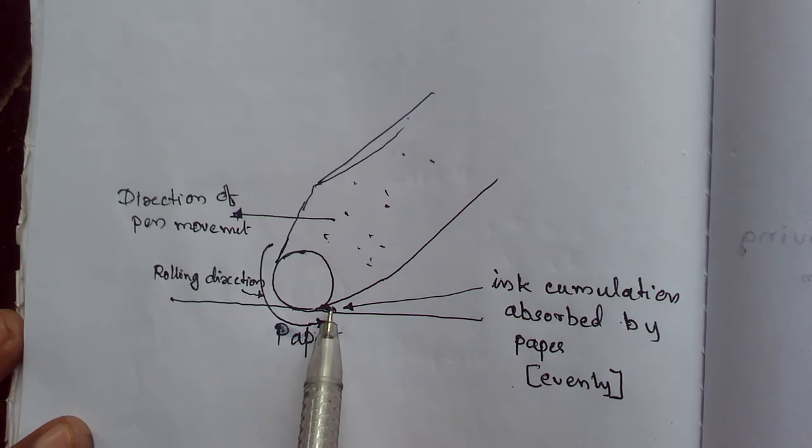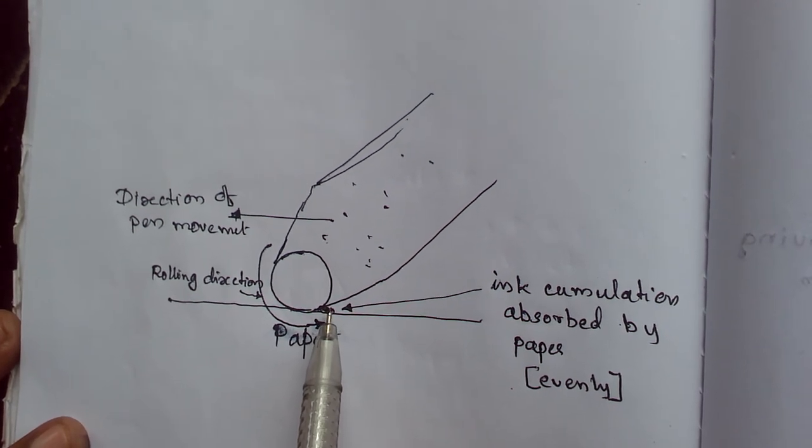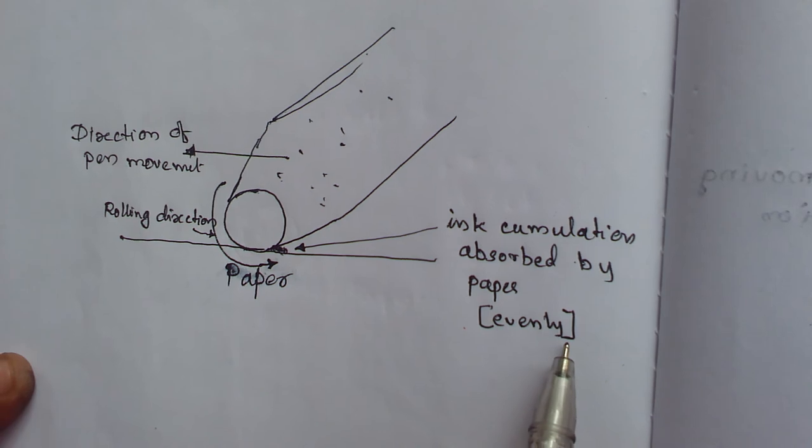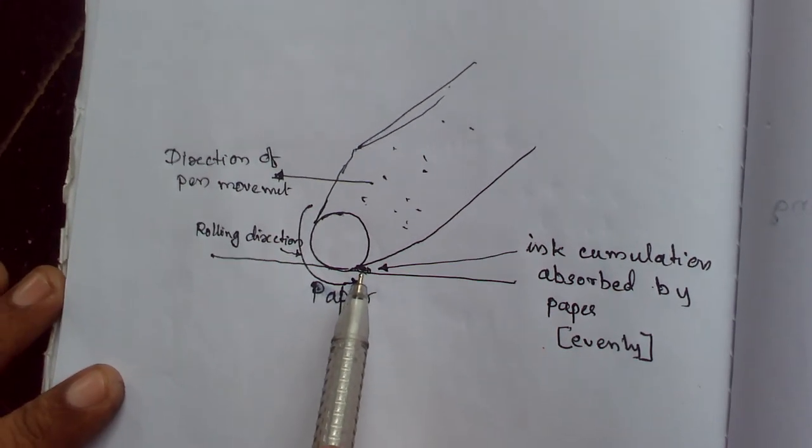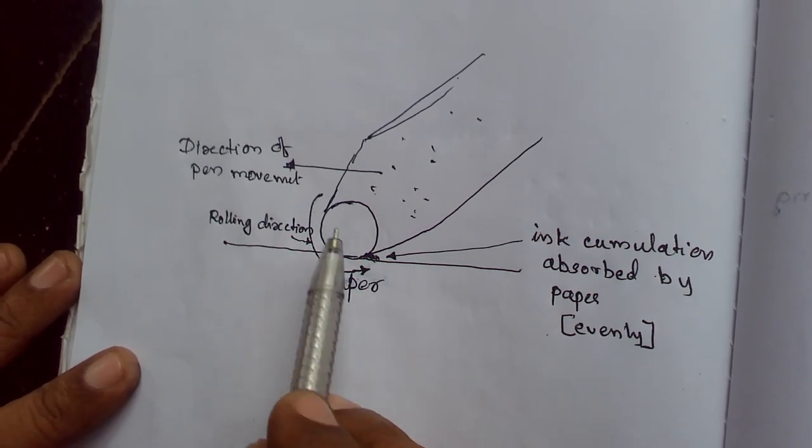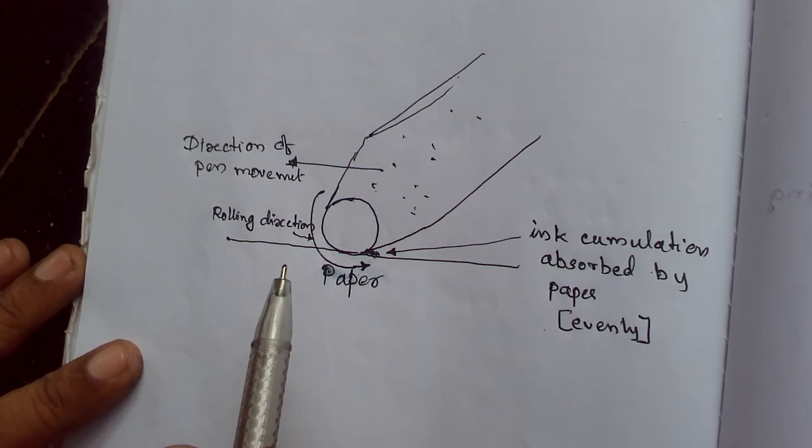But because it is close to the paper, that ink is absorbed by the paper evenly, not at the starting. So there is no such accumulation either at the start or at the end of the lines.